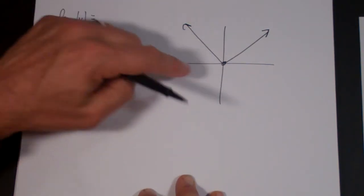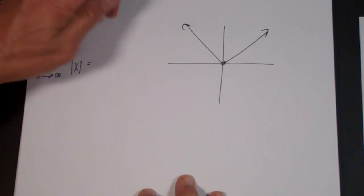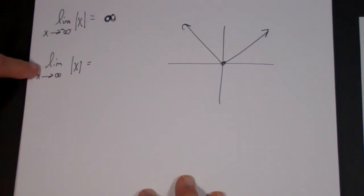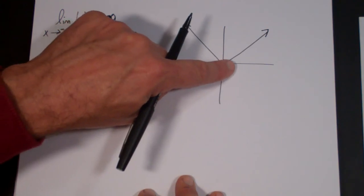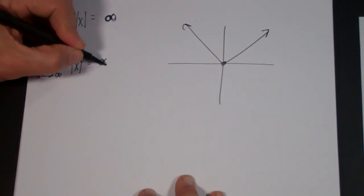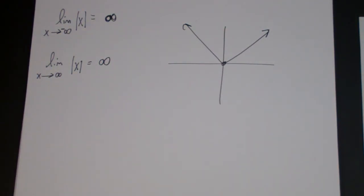You notice that as x goes to negative infinity, that is moving along the x axis in this direction, y gets larger and larger positive, so that is infinity. And as x goes to positive infinity, so as x goes in this direction, what happens to y? y goes to positive infinity as well. And that is the end behavior. And that is the properties of y equals absolute value of x.